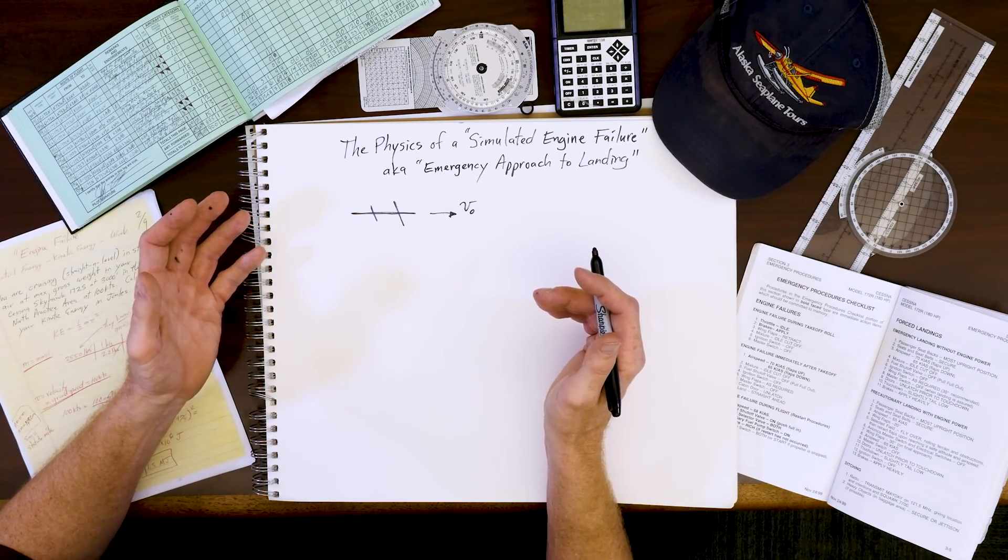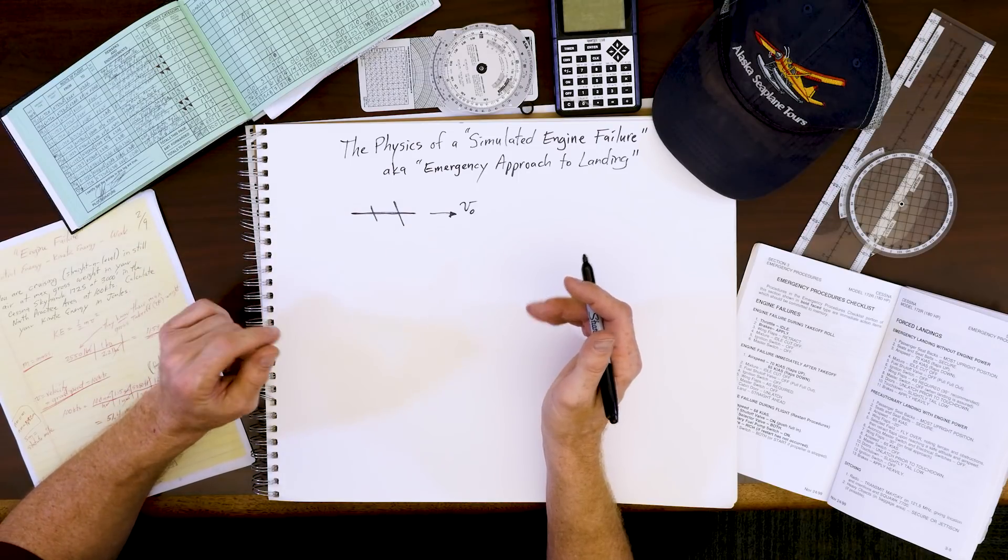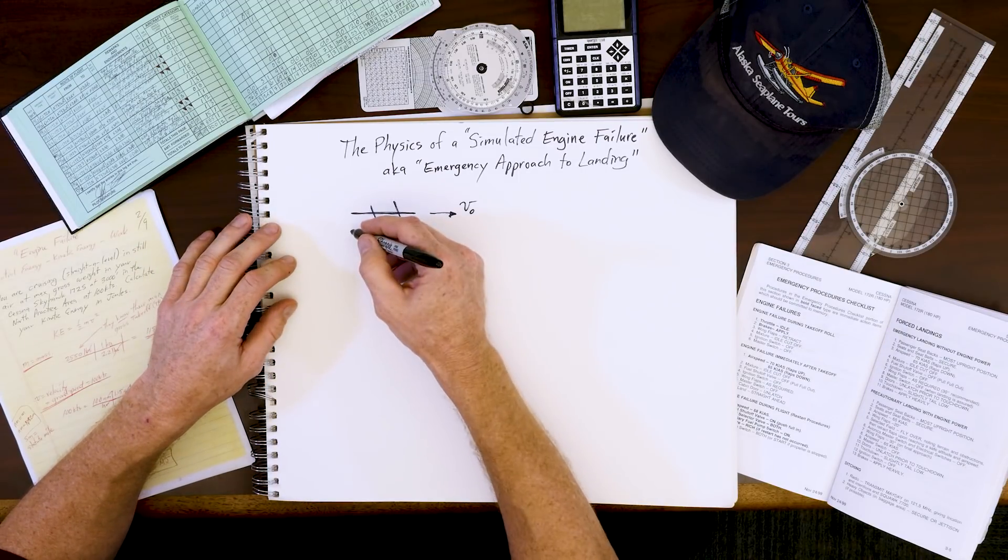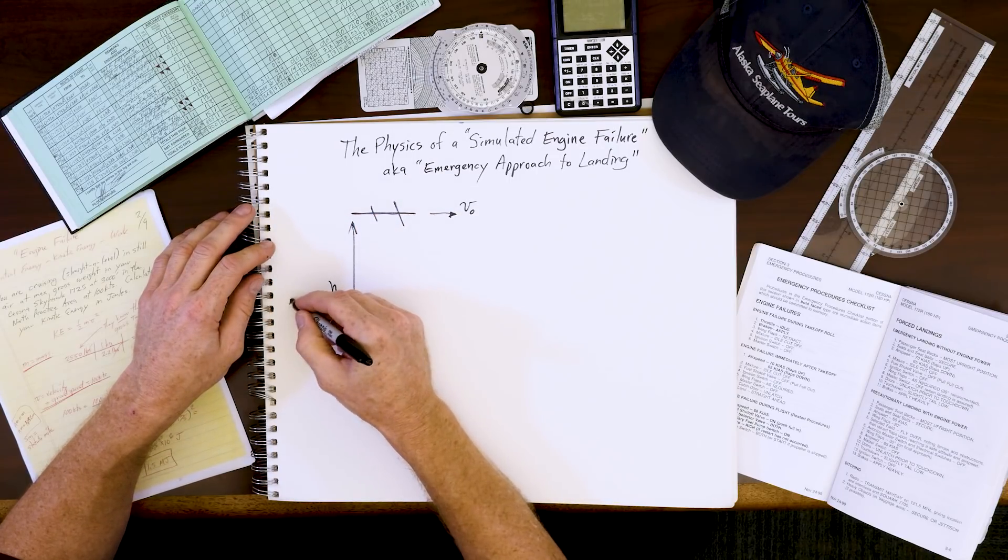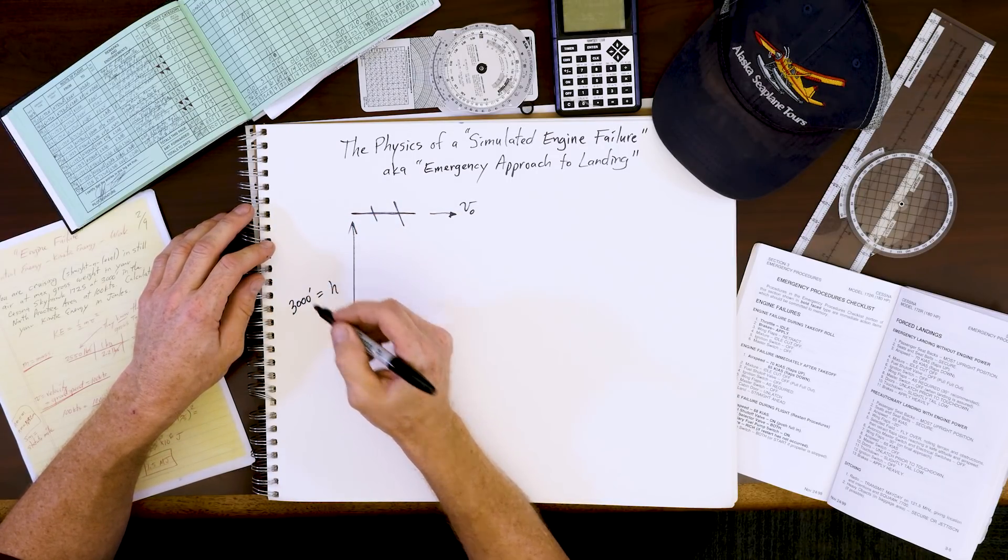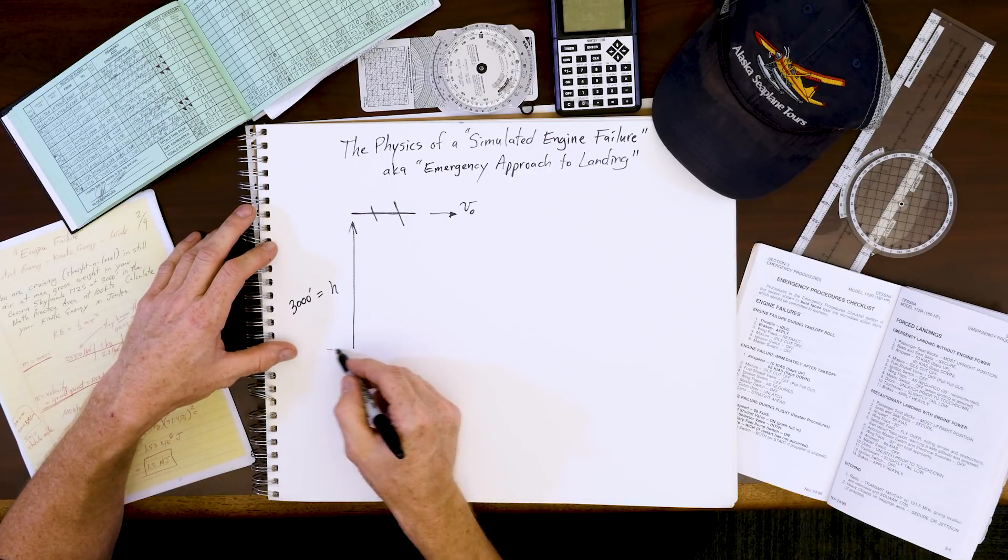The energy of the total situation is very key. Energy management is the key that flight instructors use. So we're going to be at some height h, typically 3,000 feet is what ATC always gives us going to the south of the north practice area.